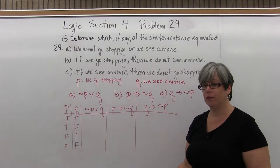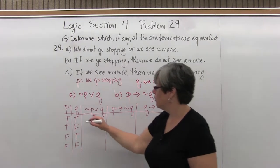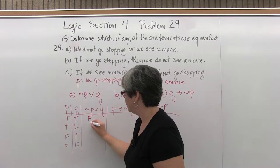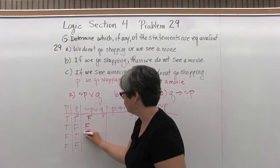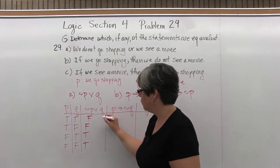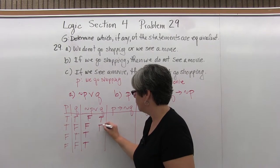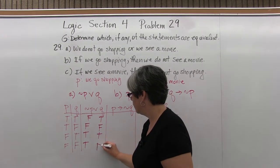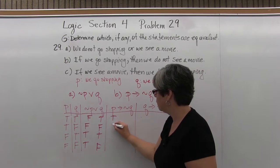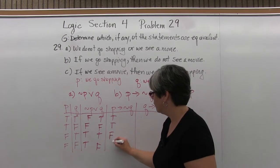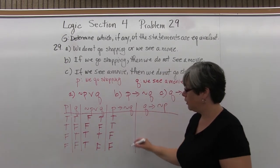I'll start by carrying down all the simple statements and their negations. So not P will be false, false, true, true. Q will be true, false, true, false. P will be true, true, false, false.